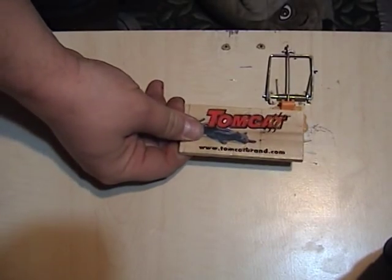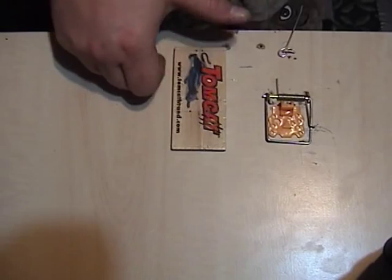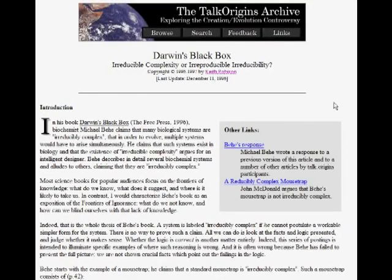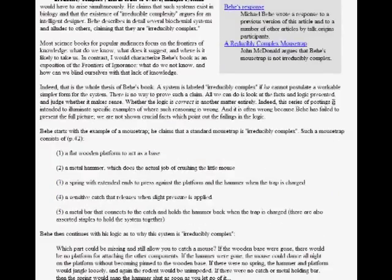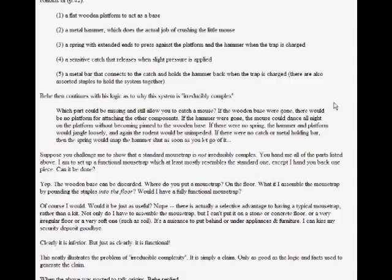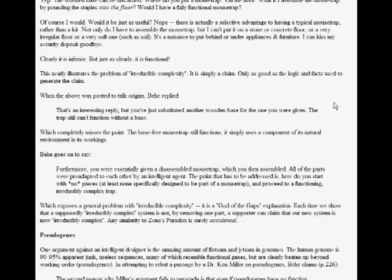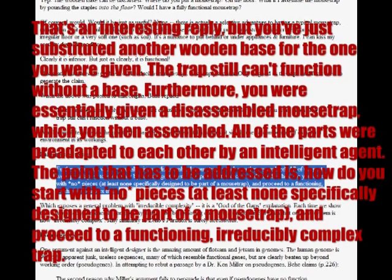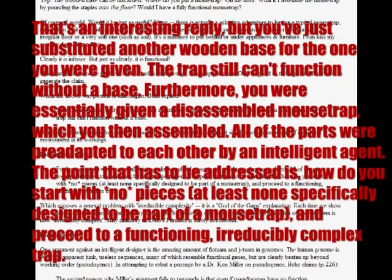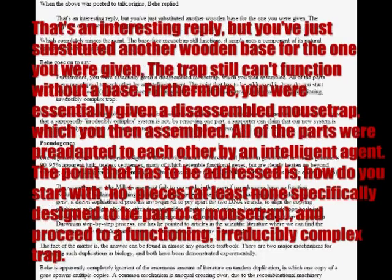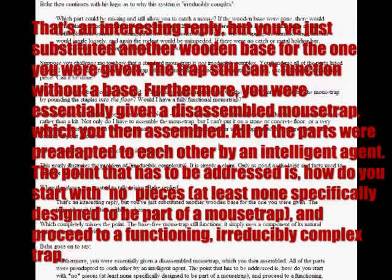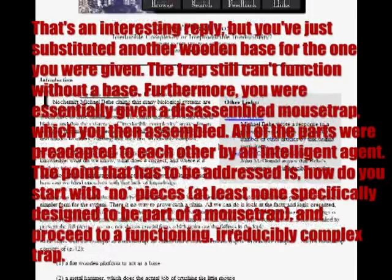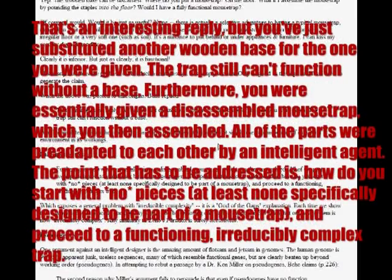A reasonable feeling of astonishment may visit the regular viewer when it is revealed that this concept is not original to the Jaguar Jones Channel. It was first proposed by Keith Robertson of Harvard University at www.talkorigins.org. Furthermore, Behe himself actually replied. Here is what the intellectual buffoon had to say: 'That's an interesting reply, but you just substituted another wooden base for the one you were given. The trap still can't function without a base. Furthermore, you were essentially given a disassembled mousetrap which you then assembled. All of the parts were pre-adapted to each other by an intelligent agent. The point that has to be addressed is how do you start with no pieces — at least none specifically designed to be part of a mousetrap — and proceed to a functioning irreducibly complex trap?'